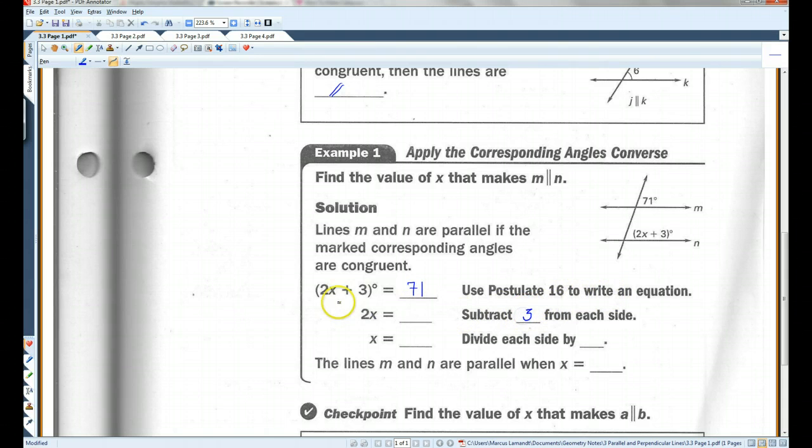I'm going to subtract 3 from each side. 71 minus 3 is 68. I'm going to divide each side by 2, which should give me 34. So, the lines m and n are parallel when x equals 34.